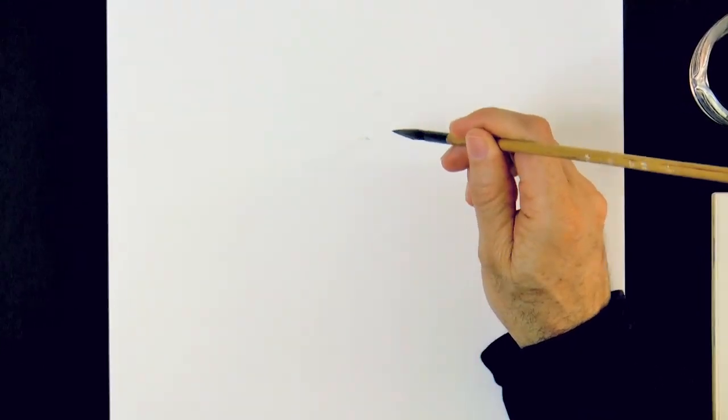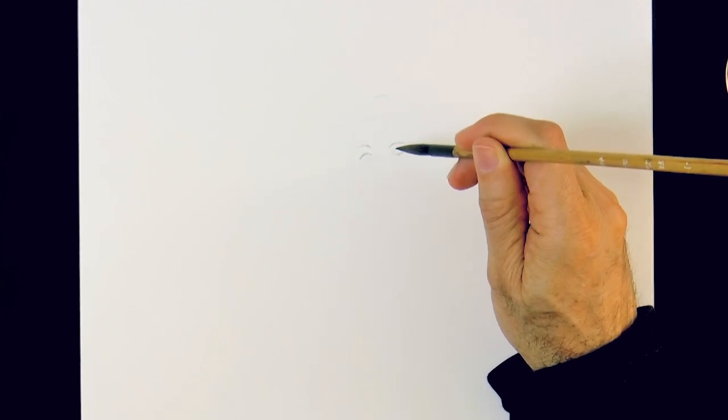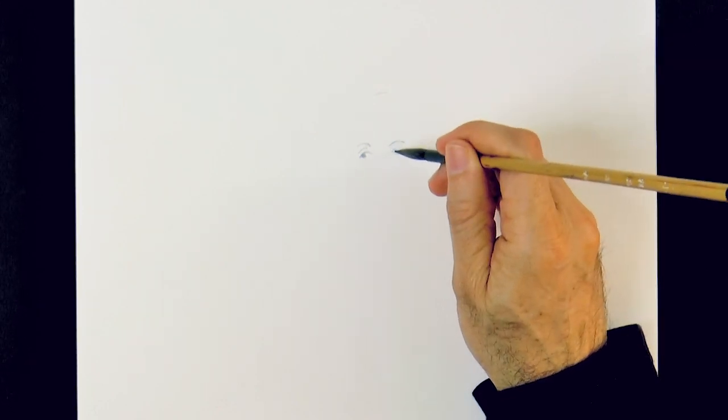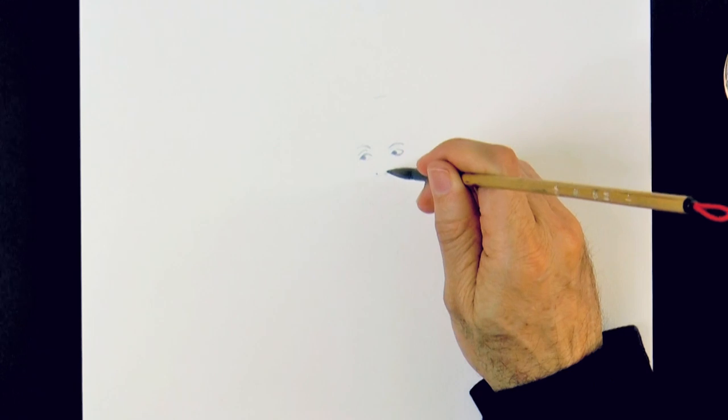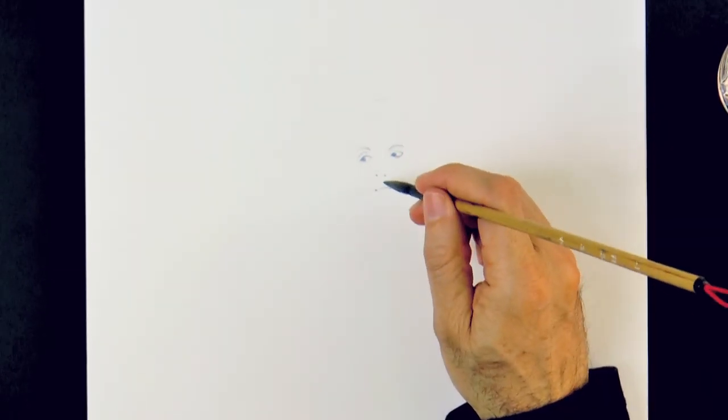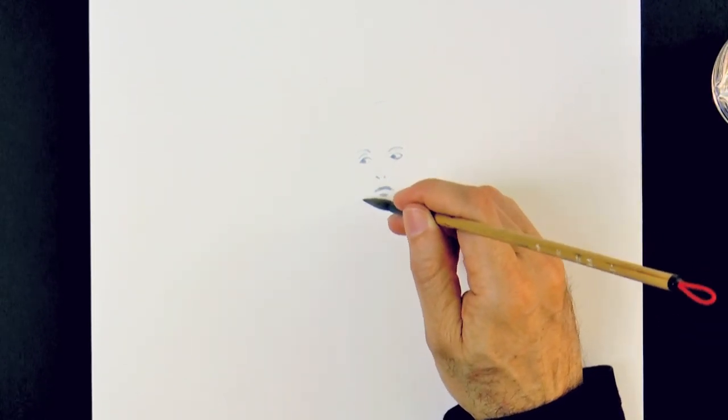I'll begin by marking the eyebrows and then the eyes, like so. The upper eyelids first and then the iris, that's the part of the eye with the color. Let's do the orifices of the nostrils lightly, the shade of the opening of the mouth dividing the lips and the little mark indicating the lower lip.